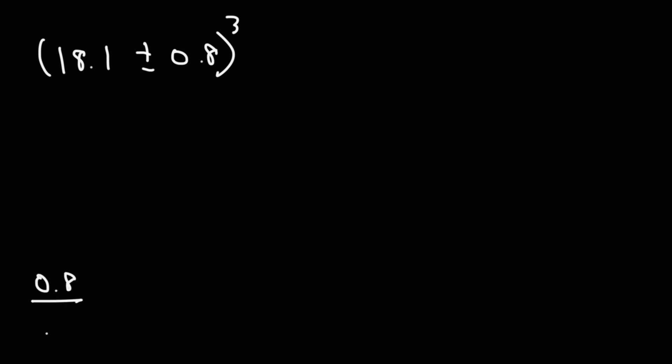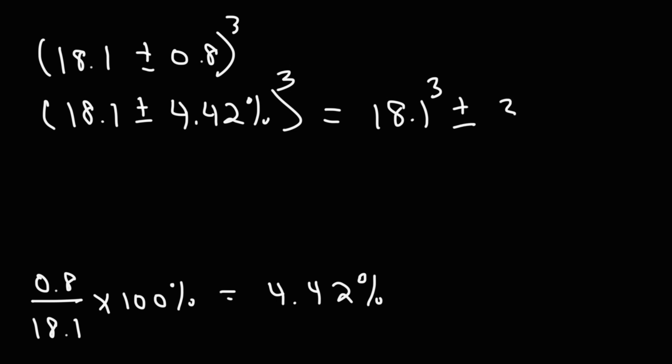So first, let's take the uncertainty 0.8 and divide it by the measured value 18.1, and let's multiply that by 100%. This is going to give us a percent uncertainty of 4.4, or 4.42, just to keep it simple. So we can rewrite this as 18.1 plus or minus 4.42%. Now it's still raised to the third power. So we're going to apply the cube now. So this is going to be 18.1 to the third power, plus or minus 3 times 4.42%.